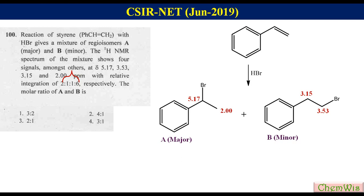In product A the signal at 5.17 ppm is for one proton with relative intensity 2.